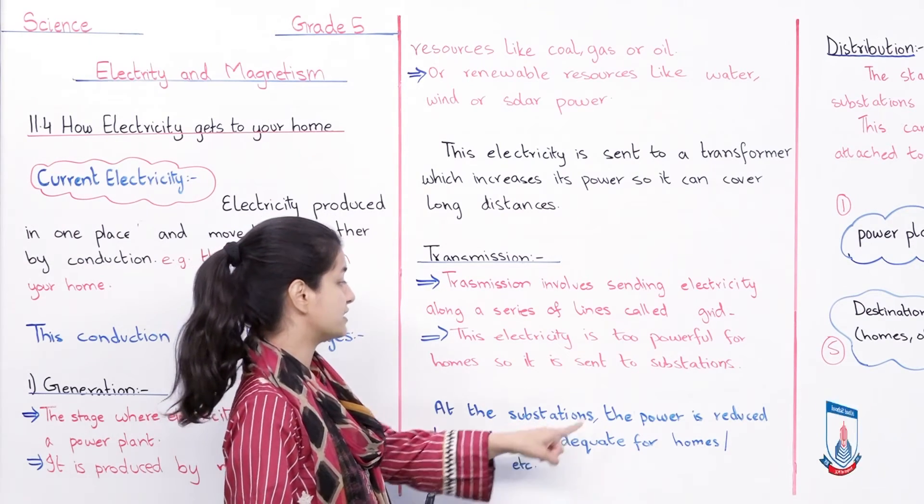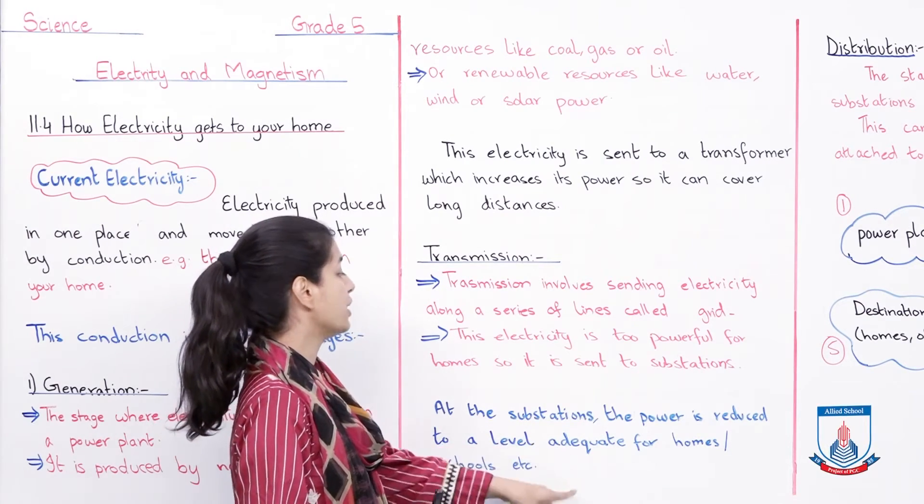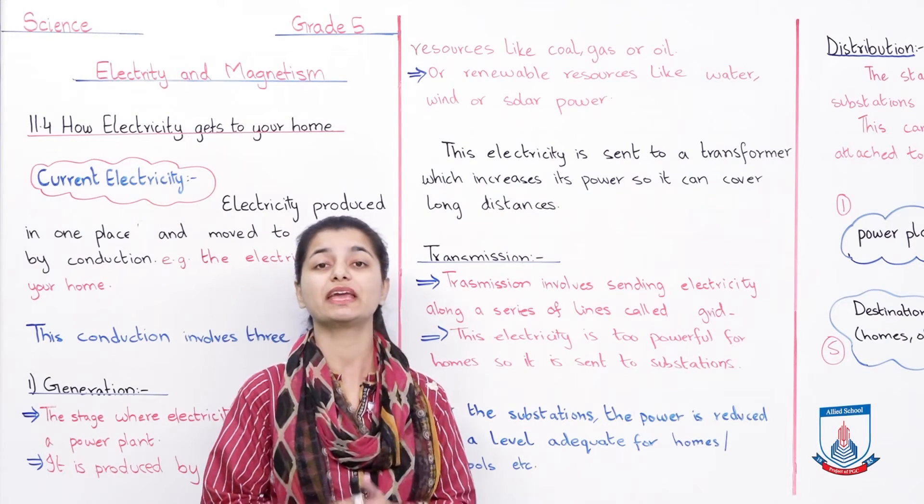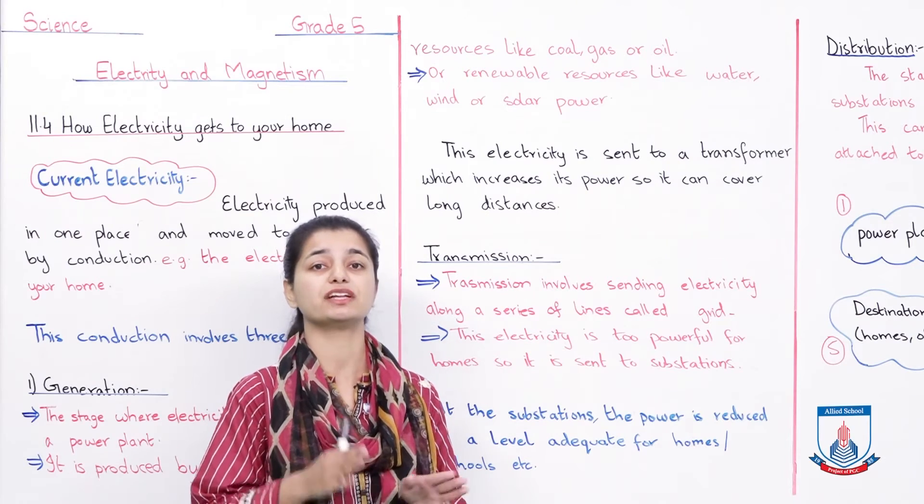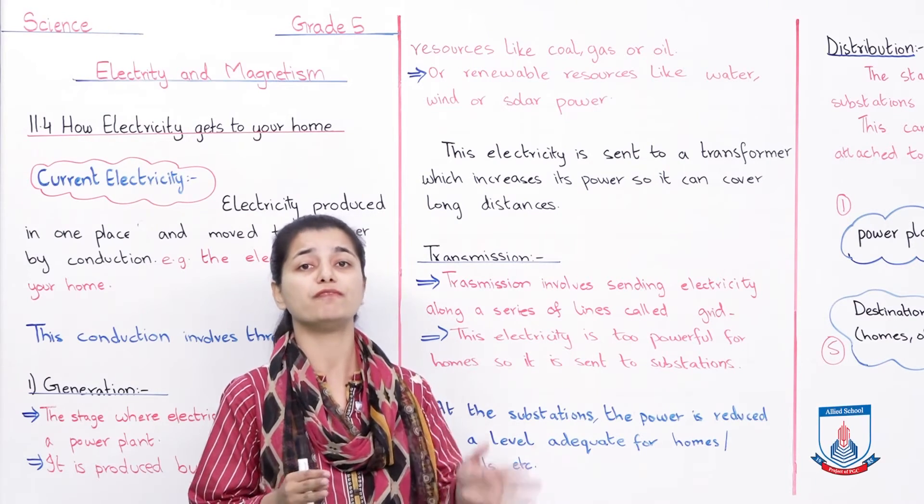At the substations, the power is reduced to a level adequate for homes, schools, etc. At substations, the power of electricity is reduced to a level where you can send it to houses, offices, for regular use.